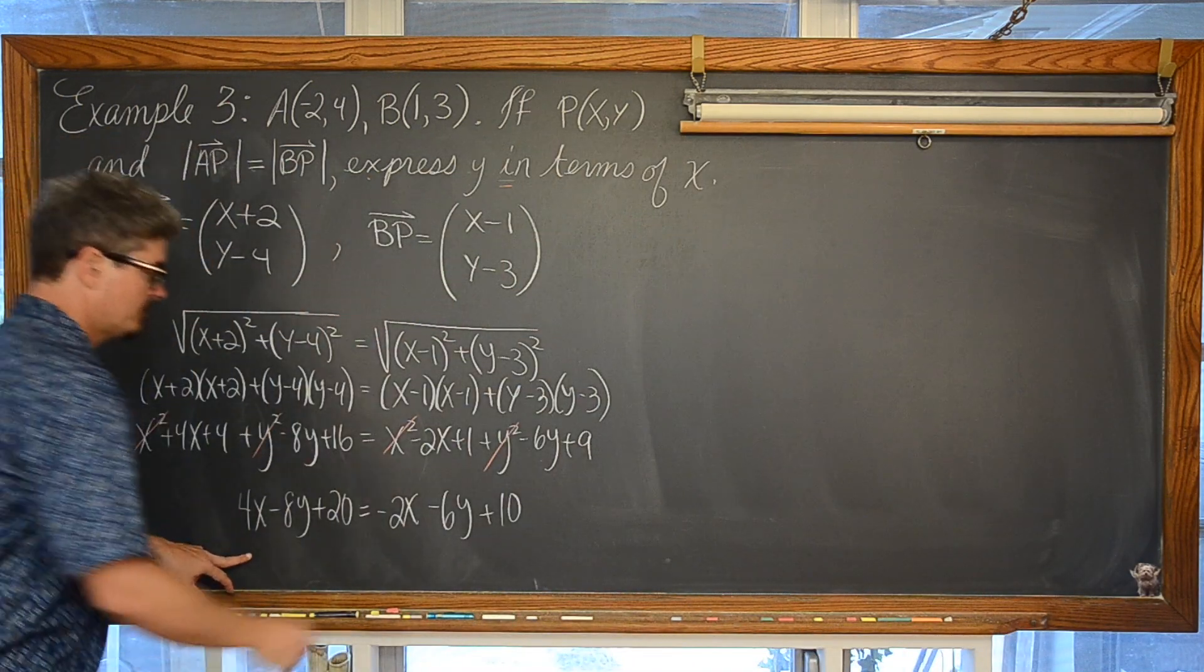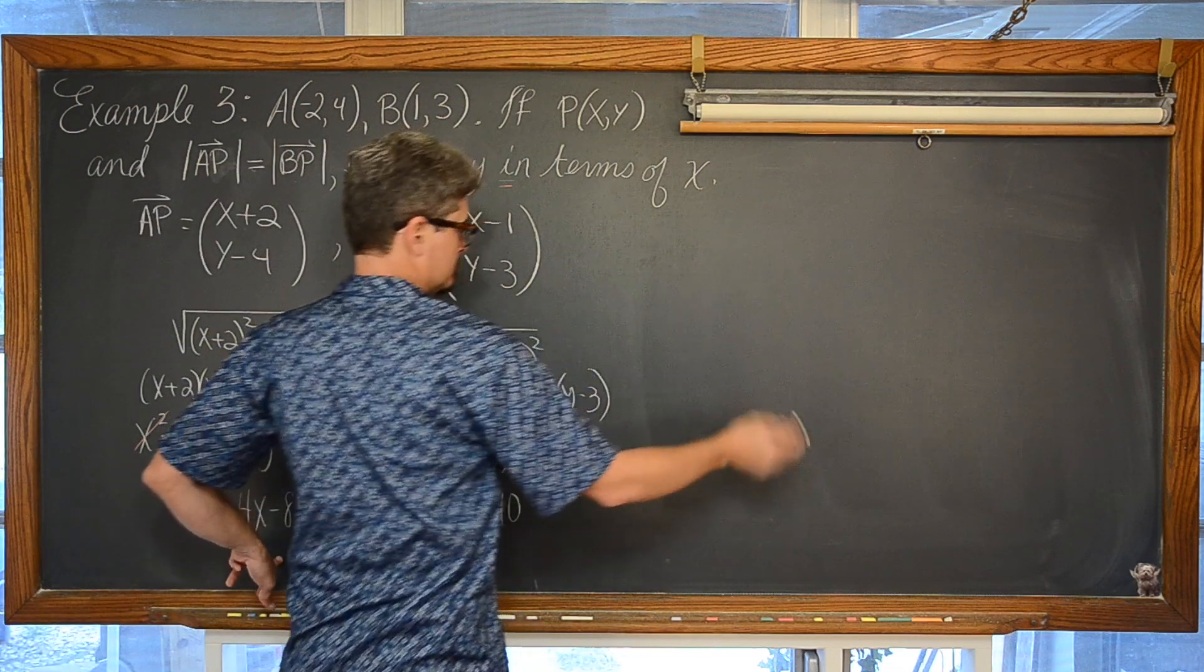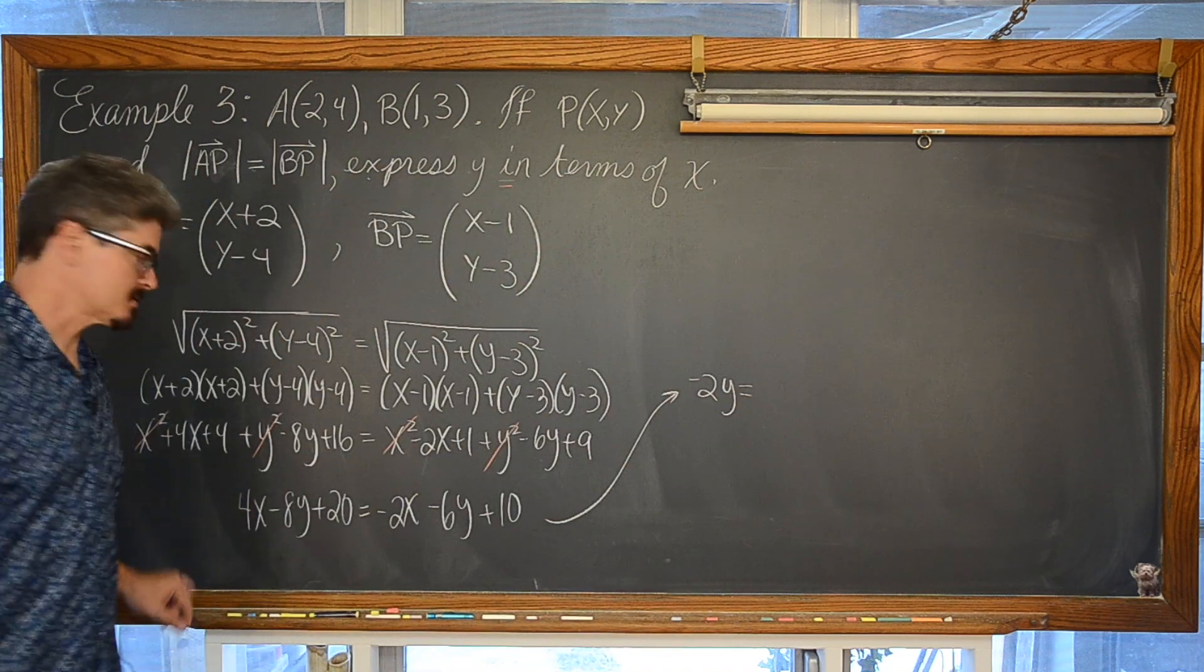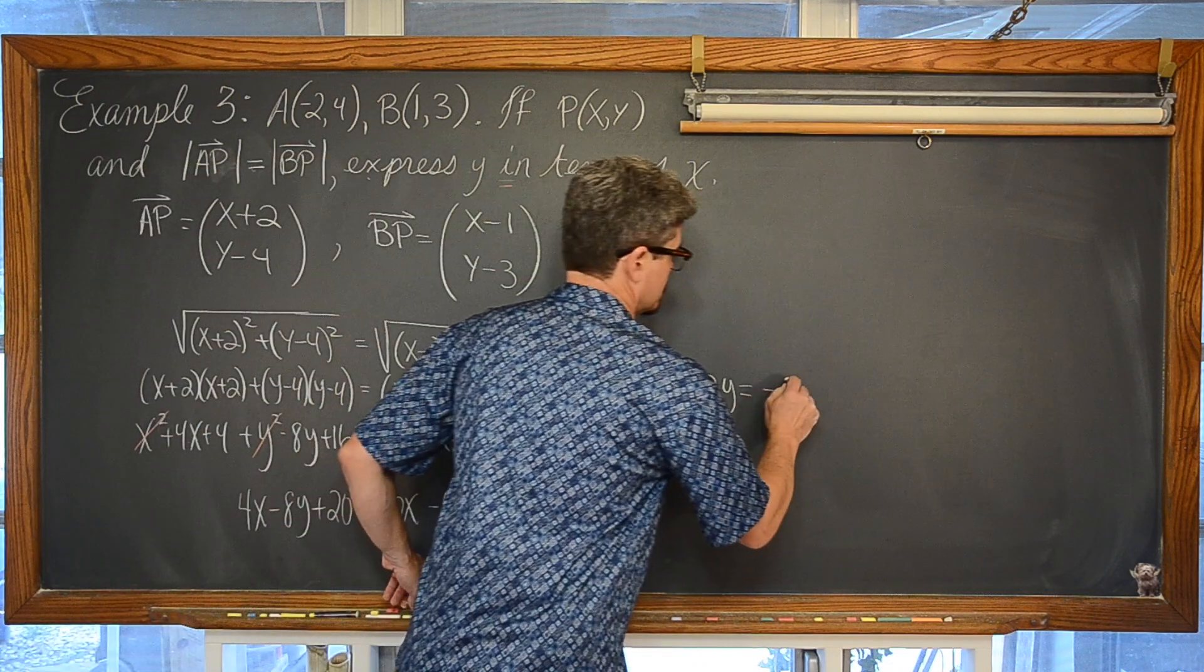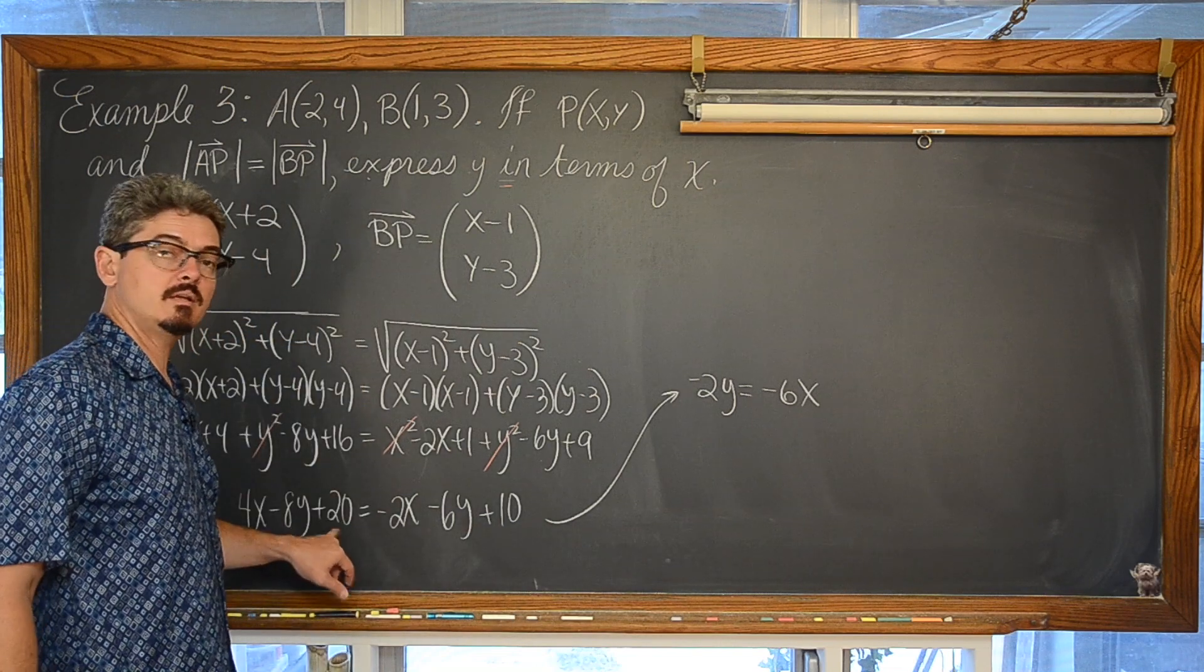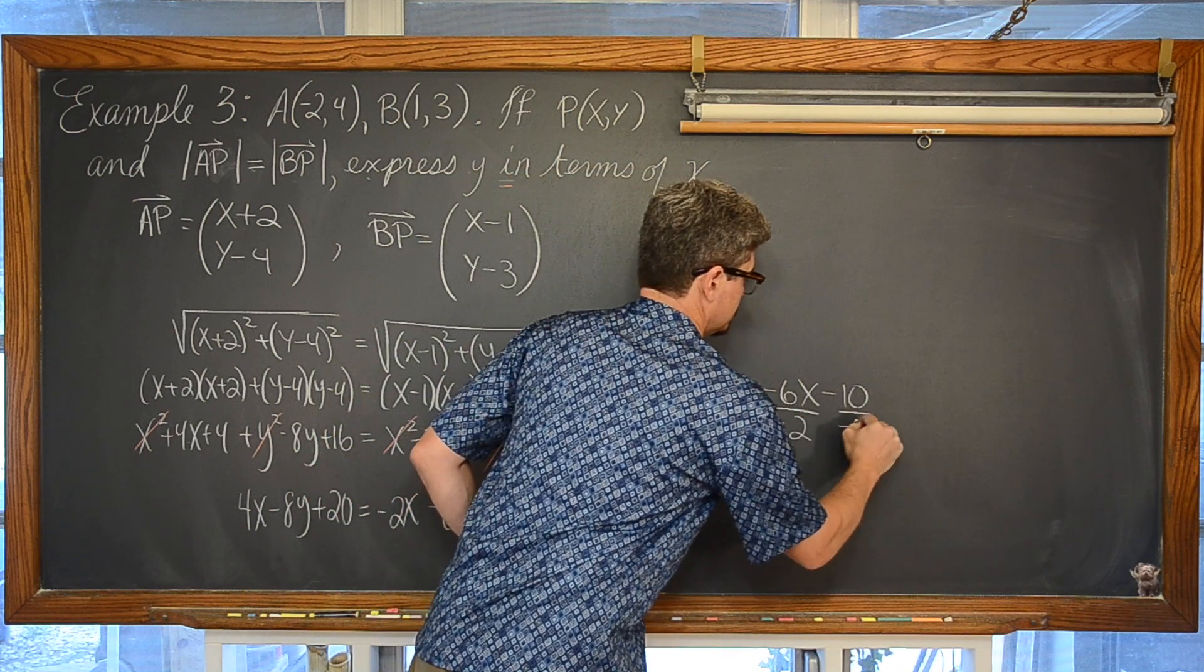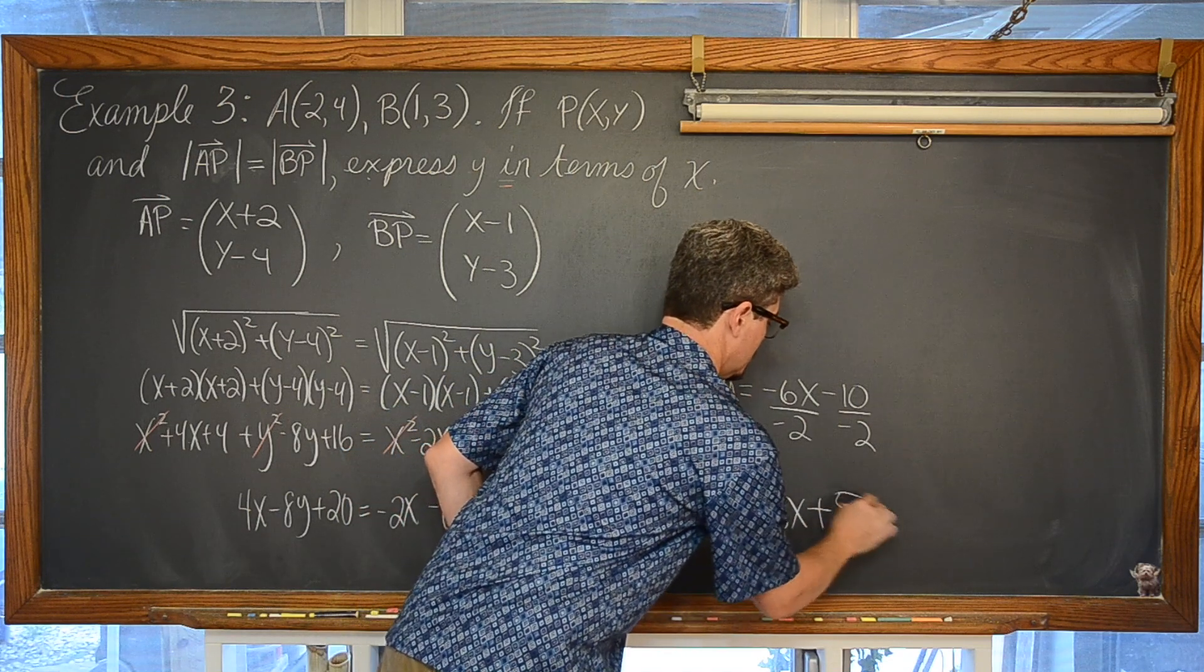So we are going to add both sides by 6y. Subtract both sides by 4x. So 2x minus 4x is negative 6x. And subtract both sides by 20 and we get negative 10. Divide everything by negative 2. And we have y is equal to 3x plus 5.